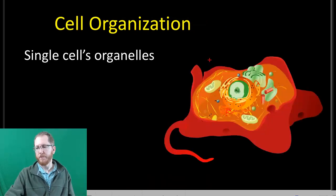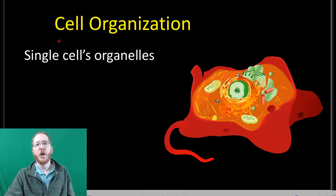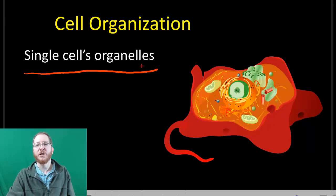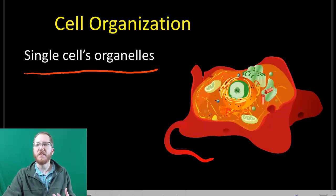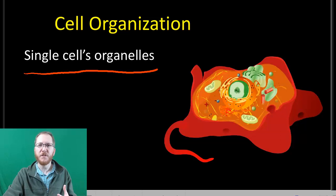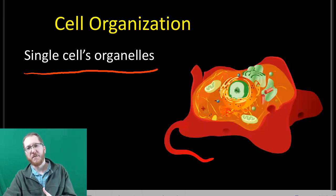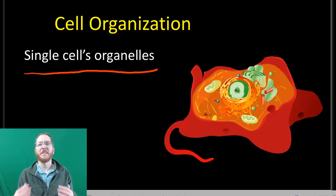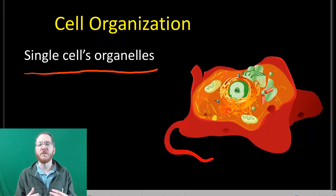The first level of organization is at the cell itself. Inside a single cell we have organization in the organelles and structures we've discussed: the cytoskeleton, plasma membrane, various types of endoplasmic reticulum, the nucleus, and mitochondria. Even in a prokaryote you have ribosomes and sections of the cytoplasm where DNA and specific enzymes are located. So even the simplest unicellular organisms have organization inside of them.